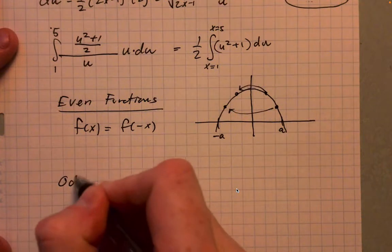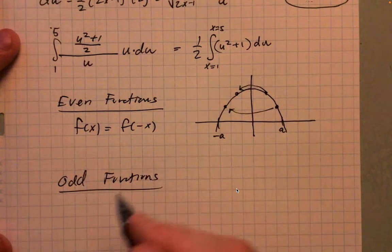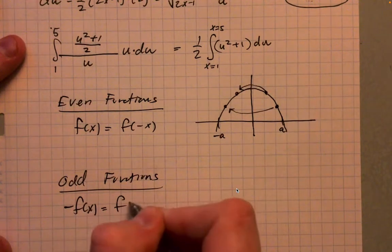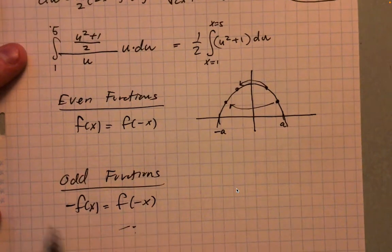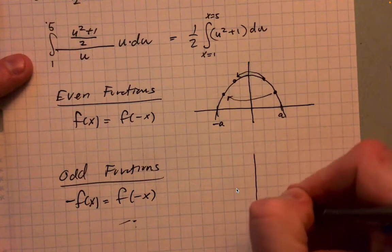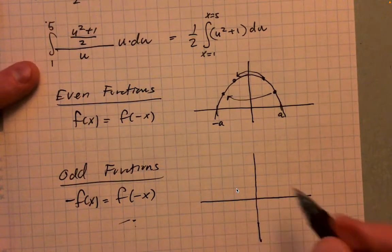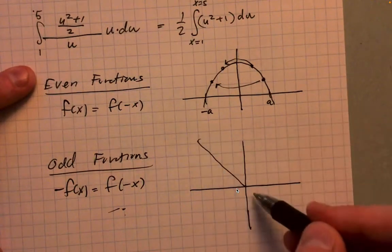An odd function is one where negative f of x equals f of negative x. So if you plug in a negative into the argument, then it makes the whole function negative. These are functions that are symmetric about the origin.